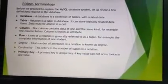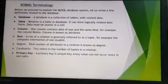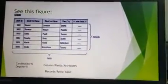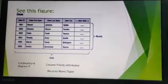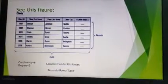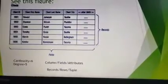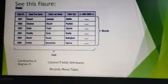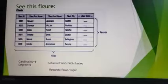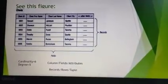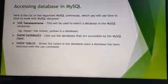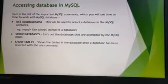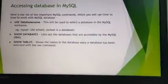A primary key is a unique key — a key value cannot occur twice in a table. In this figure, I am creating a table named 'clients' with attributes: client ID, client first name, client last name, client city, and other fields. There are six records in this table, so cardinality equals six and degree equals five. Degree is the number of attributes in a relation, and cardinality is the number of tuples.